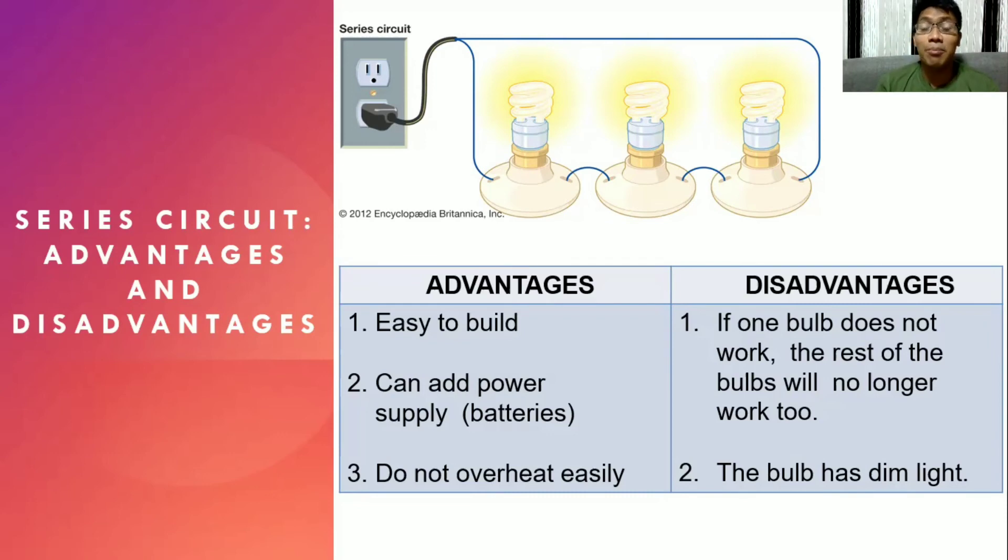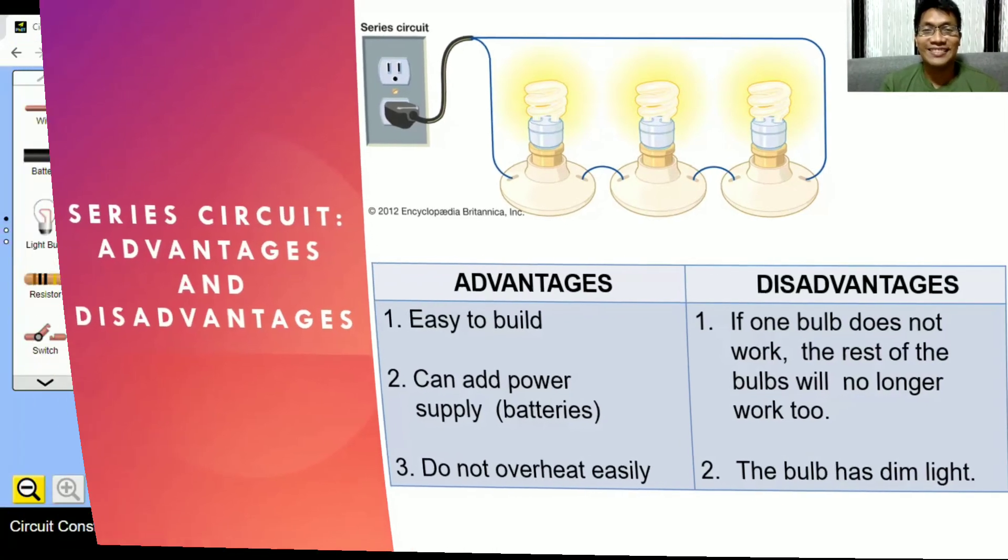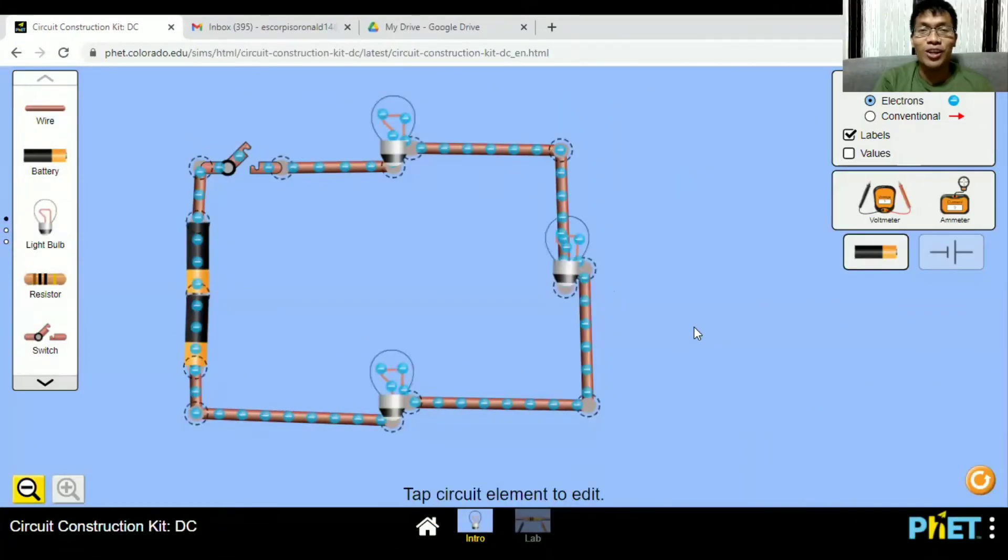Second disadvantage, the bulb has dim light. This is caused by the division of the voltage coming from the source. For us to visualize this, let's take this simulation.